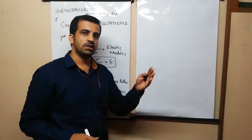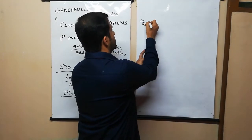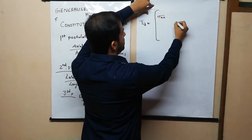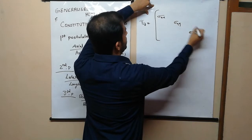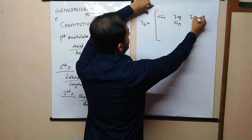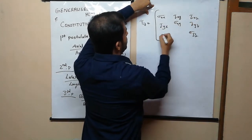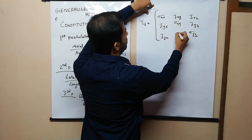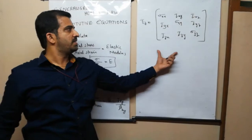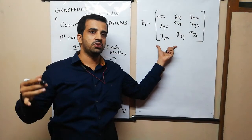To express the state of stress at a point, we have the stress tensor sigma_ij. It contains: sigma_xx, sigma_yy, sigma_zz on the diagonal, and off-diagonal shear components tau_xy, tau_xz, tau_yx, tau_yz, tau_zx, tau_zy. This stress tensor is sufficient to express the state of stress at a point.